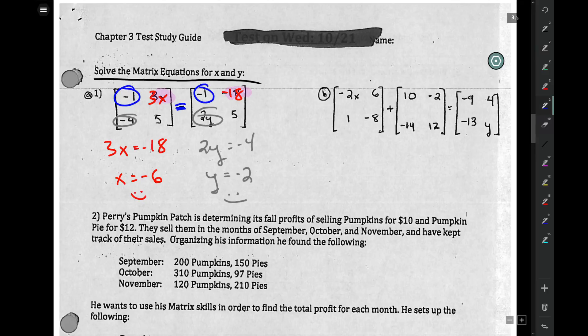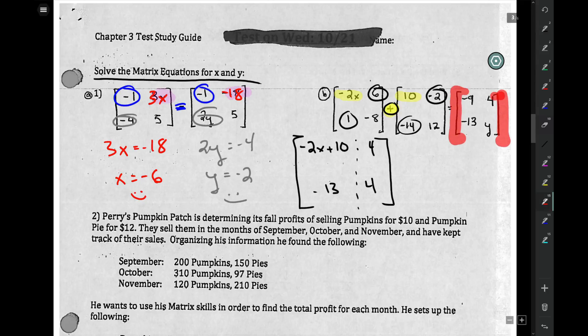For these ones, it's just a tad harder. You need to add first. So 2x plus 10 equals negative 2x plus 10. A way to check here: 6 plus negative 2 is 4, 1 plus 13 is negative 13, and negative 8 plus 12 is 4. So this matrix equals this matrix.